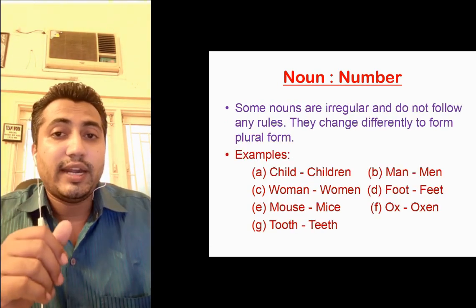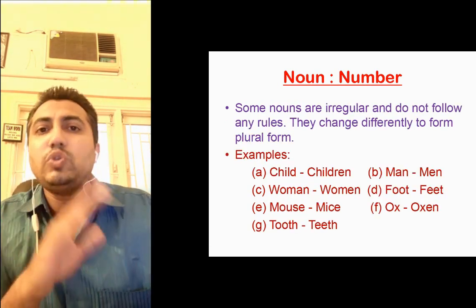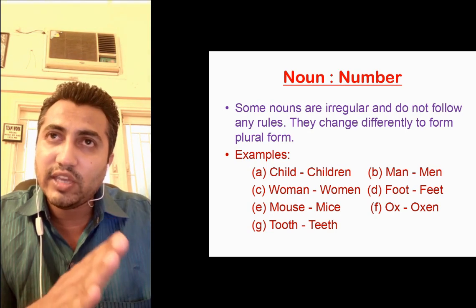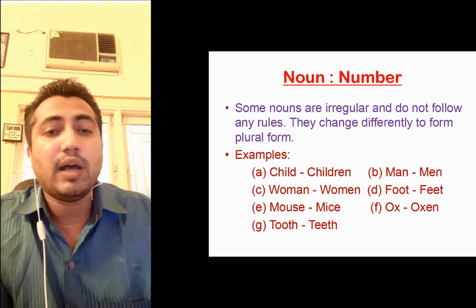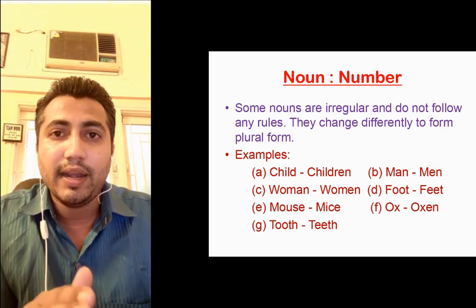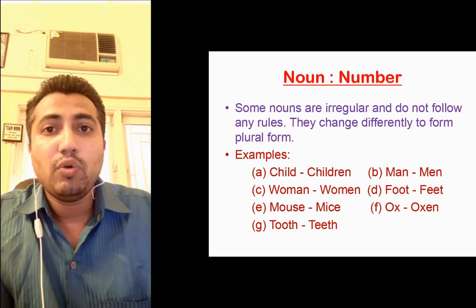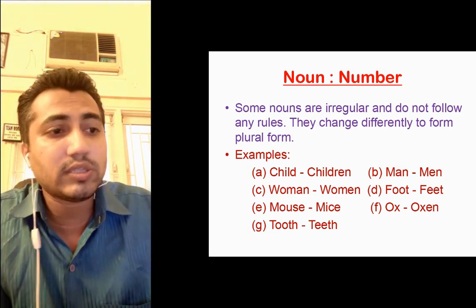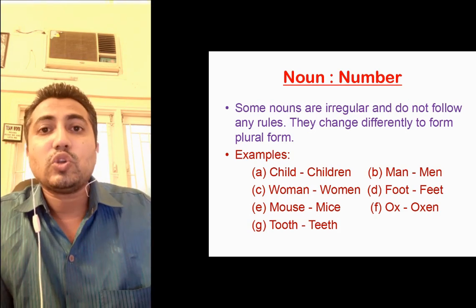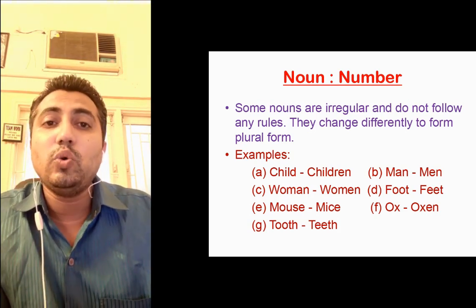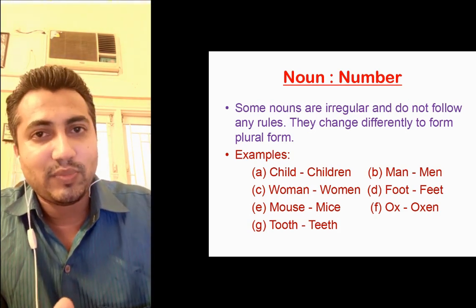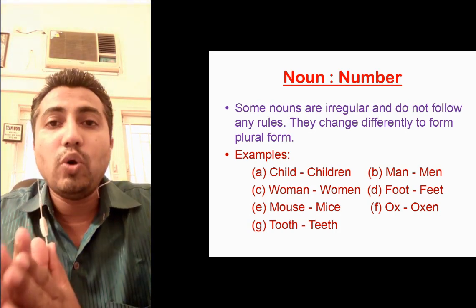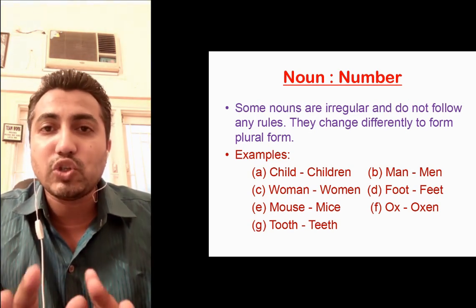The last rule: there are some nouns which do not follow any rule — they change in a different way. For example: child → children, man → men, woman → women, foot → feet, mouse → mice, ox → oxen, tooth → teeth. These are nouns which have no specific rule to change from singular to plural.